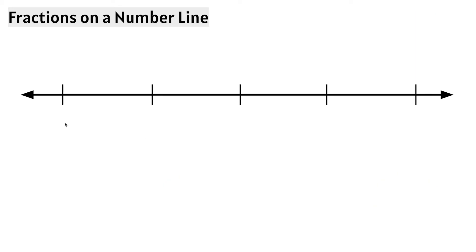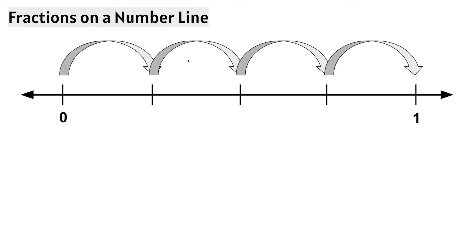Let's take a look at this number line. This number line still has the whole numbers 0 and 1, but we notice there are more tick marks. In order to figure out what fractions go on this number line, we need to count how many sections there are between the 0 and the 1. Let's count: 1, 2, 3, 4. There are 4 equal sections between the whole numbers 0 and 1, so we will be working with the denominator 4. This tick mark represents 0, or 0 fourths.